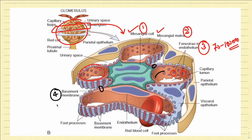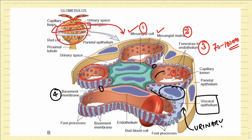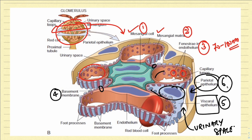Just outside the basement membrane there is an epithelium in very close contact with it, and this epithelium is called the visceral epithelium. Outside the visceral epithelium, you have a clear space called the urinary space, which is lined by another epithelium called the parietal epithelium — the sixth structure. The parietal epithelium is also the epithelium lining Bowman's capsule.